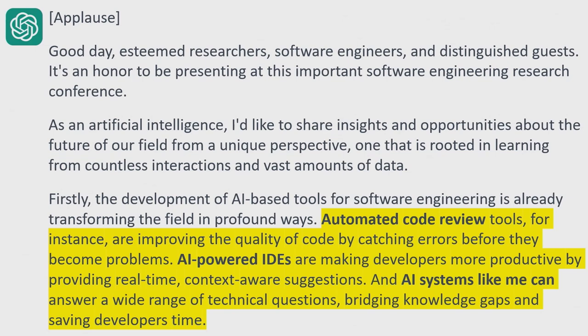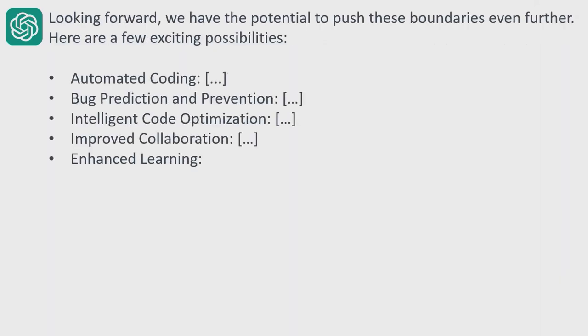Even though the training data for ChatGPT is a few years old, it actually had a really good idea of what AI is used for in software engineering right now. It highlighted automatic code reviews, AI-powered IDEs, and AI systems like itself. It also gave us some directions for the future — many exciting possibilities.